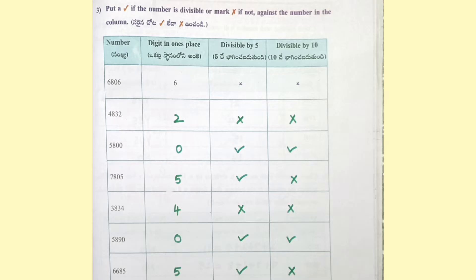7805 — last digit 5, so divisible by 5, not divisible by 10. 3834 — last digit 4, not divisible by 5, not divisible by 10. 5890 — last digit 0, divisible by 5, divisible by 10. 6685 — last digit 5, so divisible by 5 and not divisible by 10.